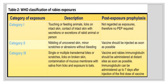Post-exposure prophylaxis (PEP) has three components: local wound care, rabies vaccine, and rabies immunoglobulin. The treatment given depends on the WHO wound categorization — Category 1 (no risk), Category 2 (minor risk), and Category 3 (major risk).